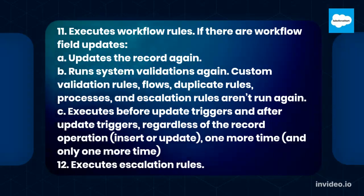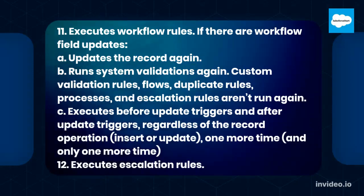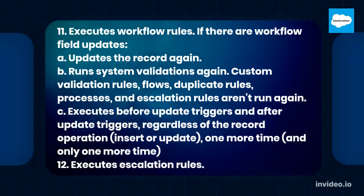B. Runs system validations again. Custom validation rules, flows, duplicate rules, processes, and escalation rules aren't run again. C. Executes before update triggers and after update triggers, regardless of the record operation (insert or update), one more time, and only one more time.